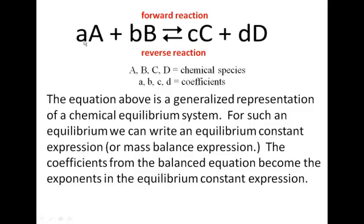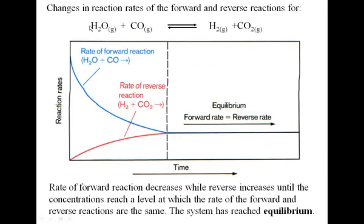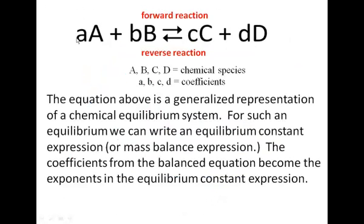You know how we'll have numbers written out in front of the chemical species. So in our previous example, the coefficient was 1 for A, small a for H2O would have been 1, small b for CO would have been 1, small c for H2 would have been 1, and also small d for CO2 would have been 1. So the small letters are coefficients, the large letters are the chemical species.